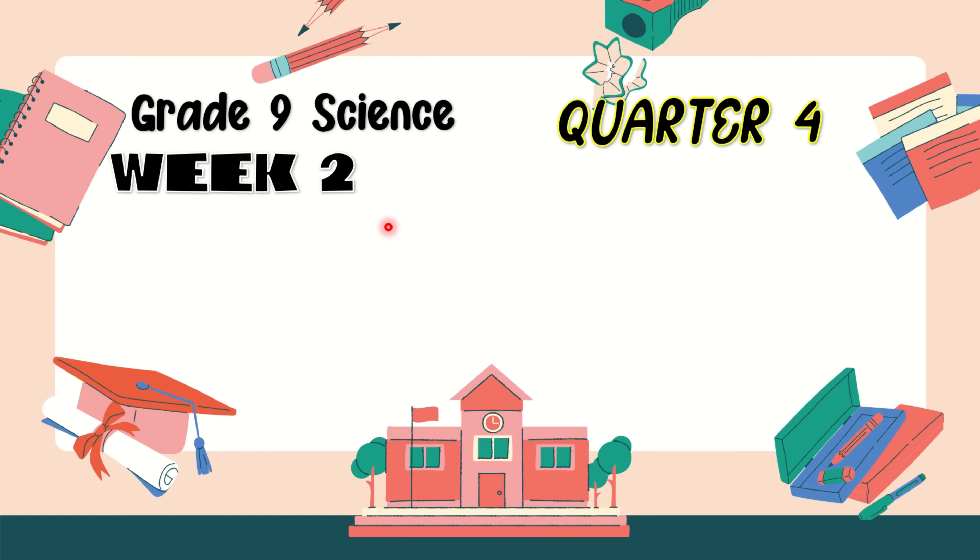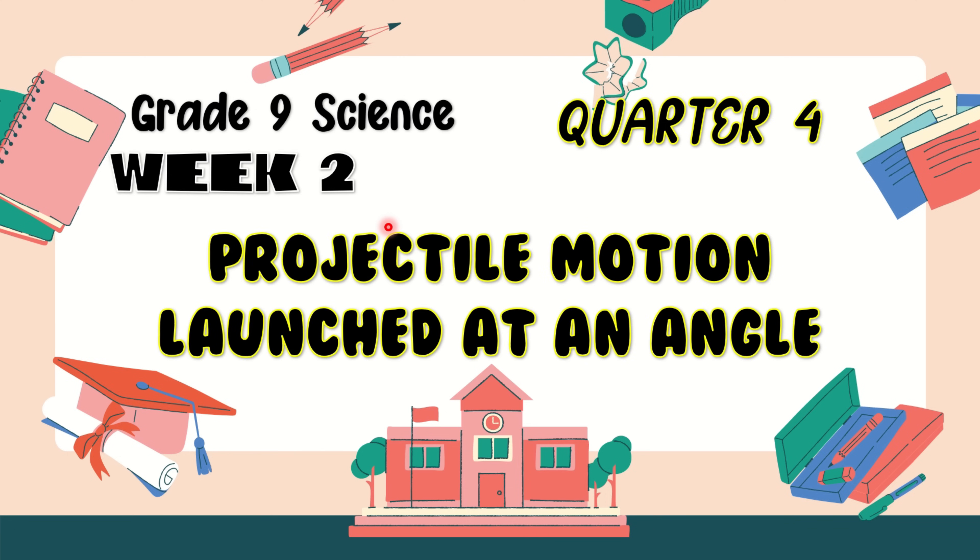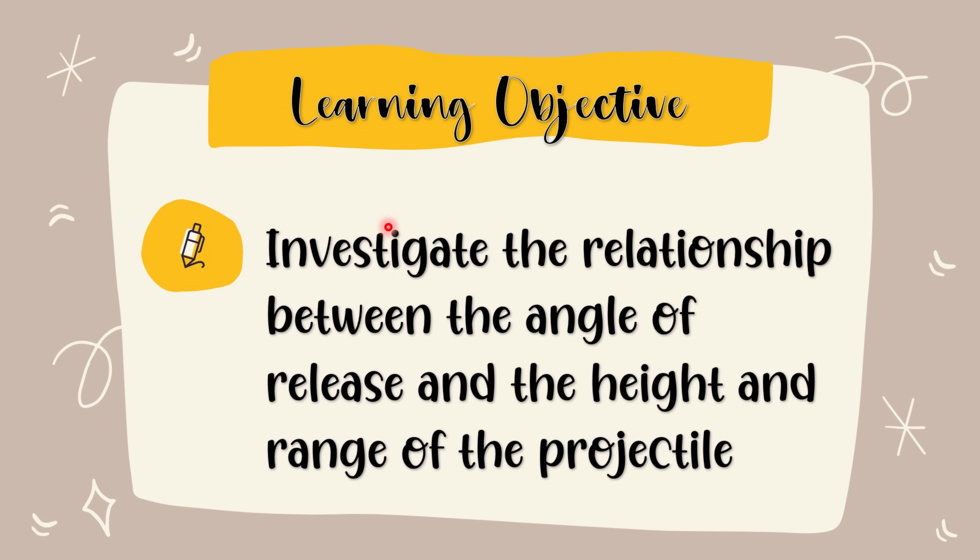We are now going to have Grade 9 Science Quarter 4 Week 2 lesson, which is all about projectile motion launched at an angle. Here's our learning objective: investigate the relationship between the angle of release and the height and range of the projectile. Get ready to learn this lesson and keep on watching!